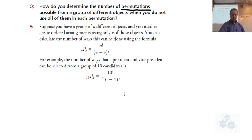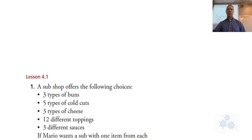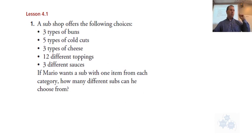Now there are sometimes restrictions as well. So let's do some examples. Here's one example from 4.1. This is in your mid-chapter review. A sub shop offers the following choices: three types of buns, five types of cold-cut meats, three types of cheese, 12 different toppings, and three different sauces. So if we're making a sub and we have all of these decisions to make - bun, meat, cheese, toppings, sauces - and we know how many choices we have for each decision, this is a fundamental counting principle.